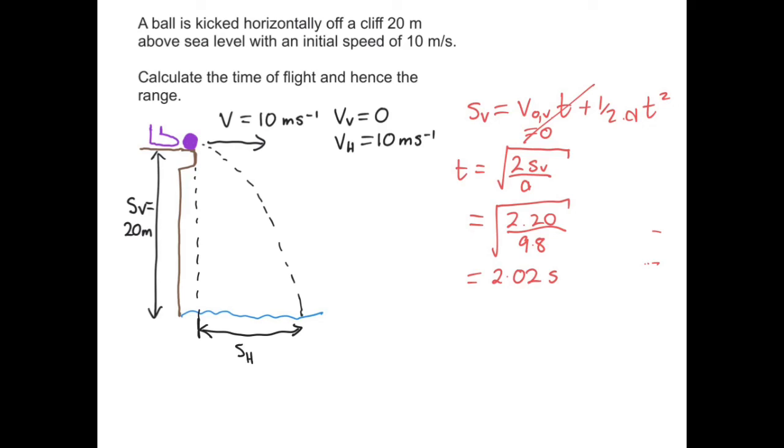And once we know the time of flight, the range, which is our horizontal displacement, is equal to the horizontal velocity, which is constant, times by the time of flight. So that's equal to ten times by two point zero two seconds, which is equal to twenty point two meters.